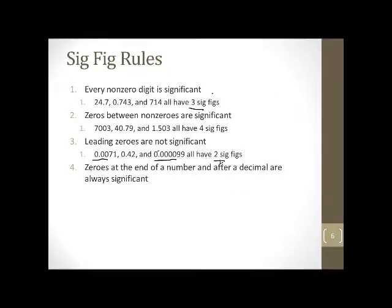Zeros at the end of a number and after a decimal are always significant. So, since these are both after a decimal and they're at the end of the number, they would be significant. So there's four significant figures. Pretty much, unless it's the number starting with a zero point, something like these do, any numbers after the decimal would be significant, unless it's a zero before the decimal.